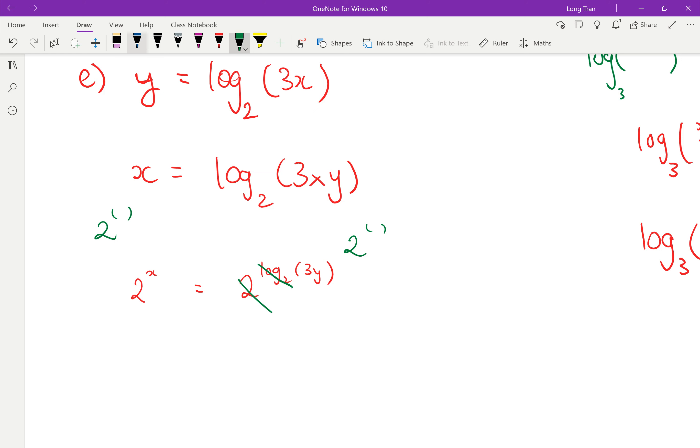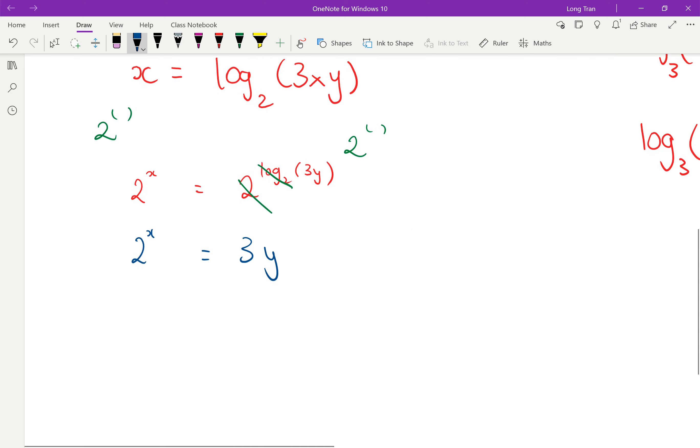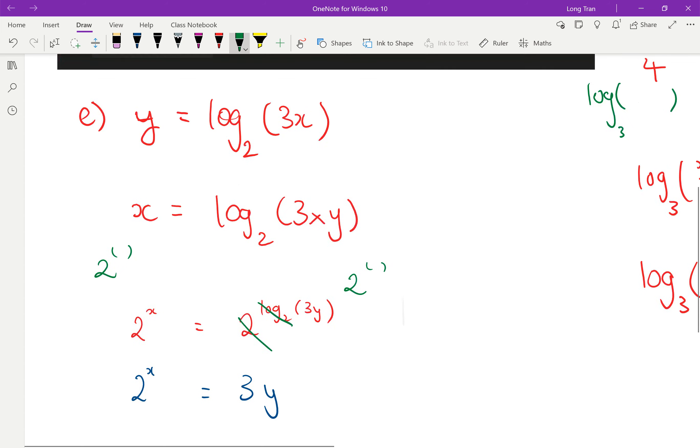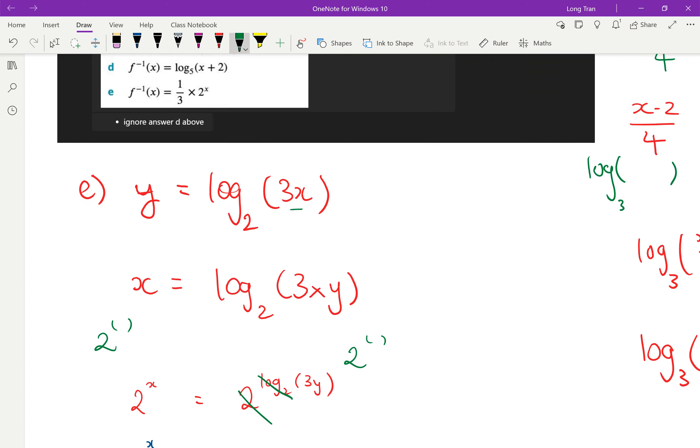And so therefore 2 to the power of x equals 3y. Now through BODMAS, remember if you're wondering why I didn't do the division of 3x first, it's because it's the log of this entire term.